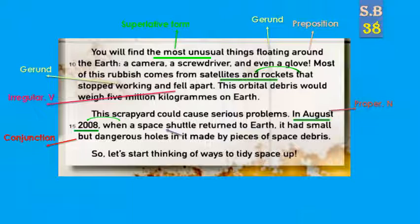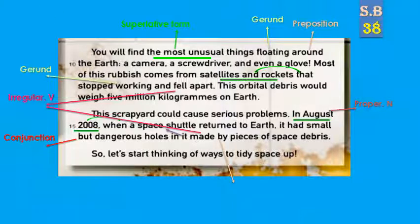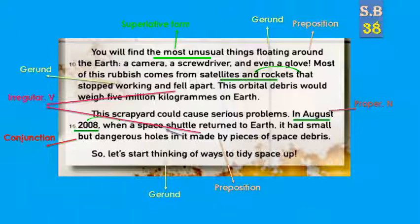So let's start thinking of ways to tidy space up — فلنبدأ في التفكير في الطرق لتنظيف المساحة. 'Made' is an irregular verb. 'By' is a preposition. 'Thinking' is a gerund — مصدر. 'Tidy up' is a phrasal verb — فعل مركب.